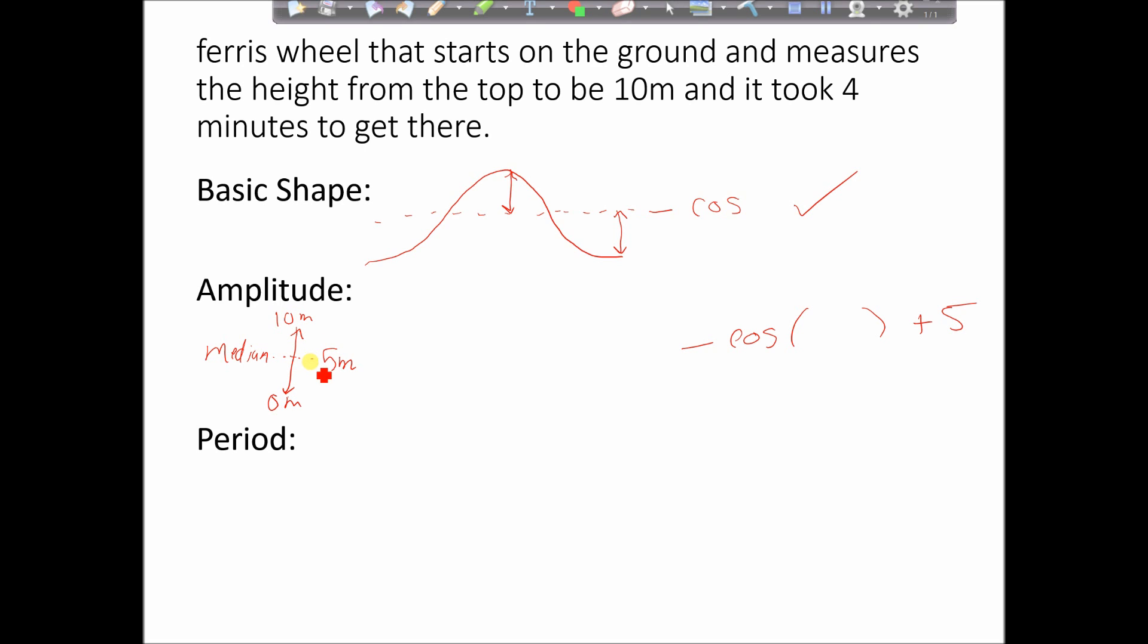Now, furthermore from that, that distance five, that also makes the amplitude five. That's not necessarily always going to be the case, but because it's starting on the ground, the median and the amplitude will be the same. So that means I can pop a five in there, because that's going to be the distance between the median. And then having to think about the period.